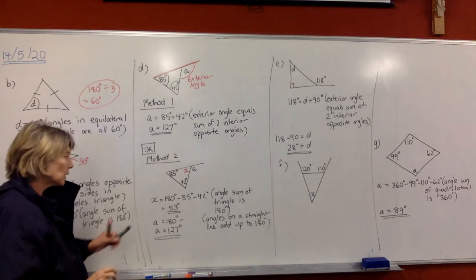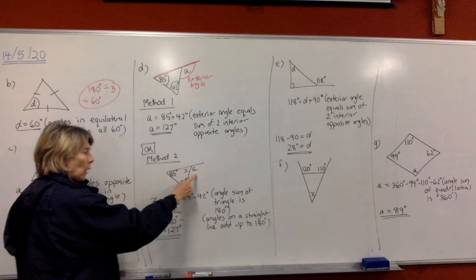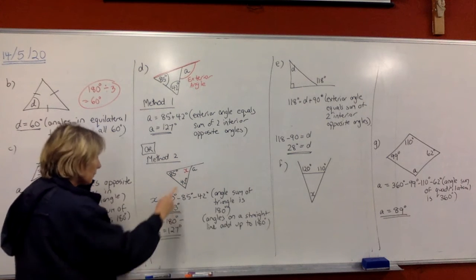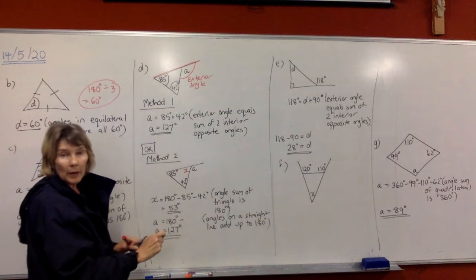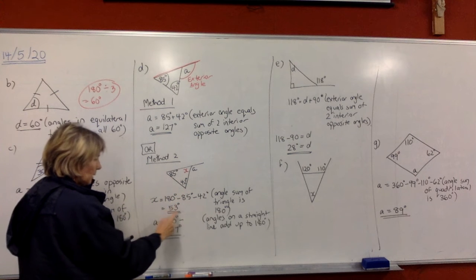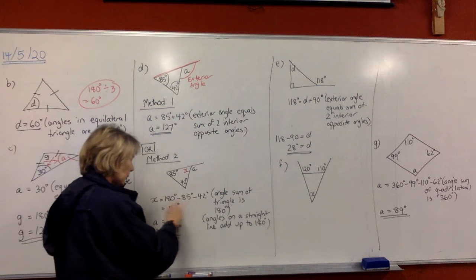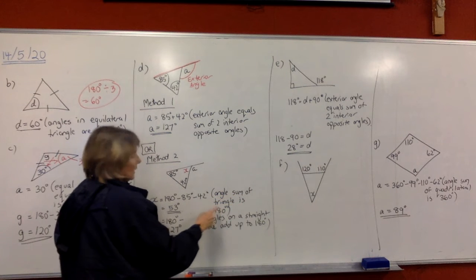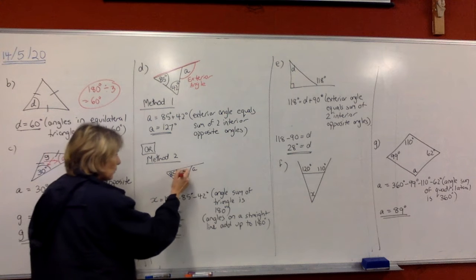If you can't remember that rule in the exam, you can still get there. Find the interior angle — put a red X there. The angles in the triangle add up to 180, so do 180 minus 85 minus 42, which gives 53 degrees. The reason: the angle sum of the triangle is 180 degrees. Write that answer in.